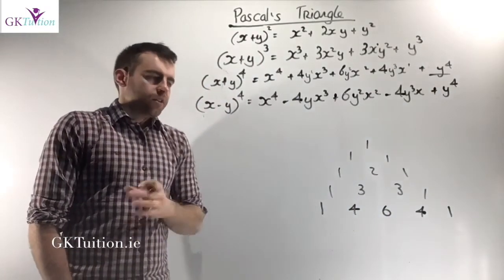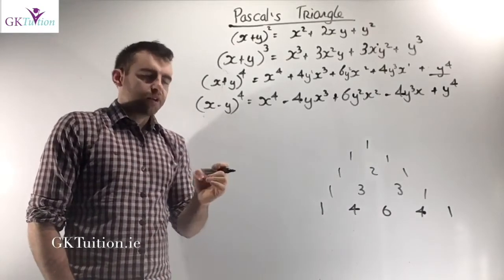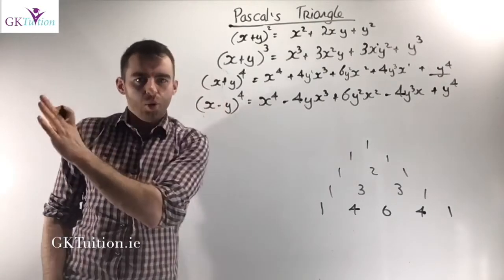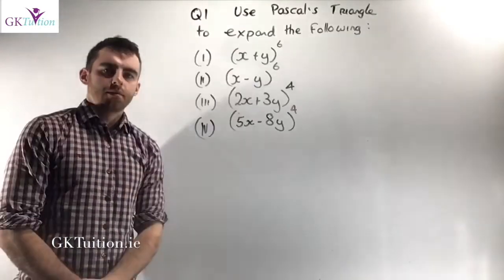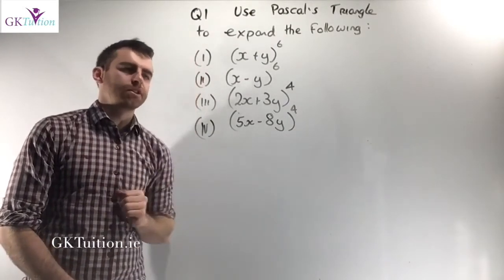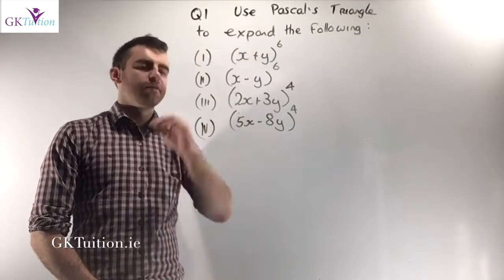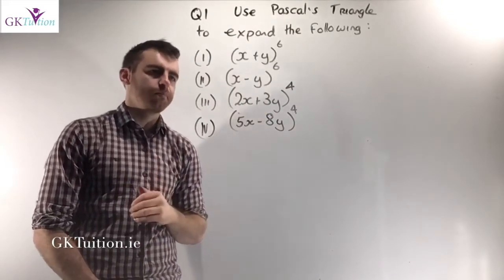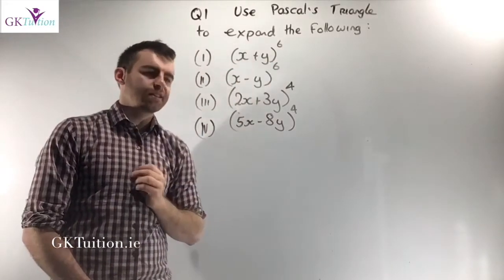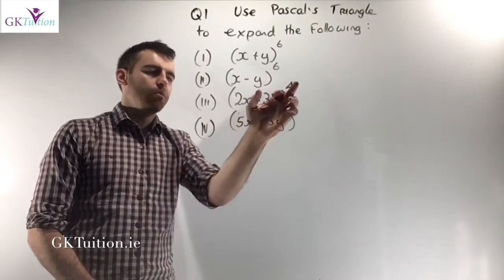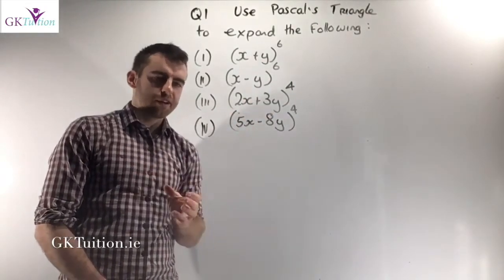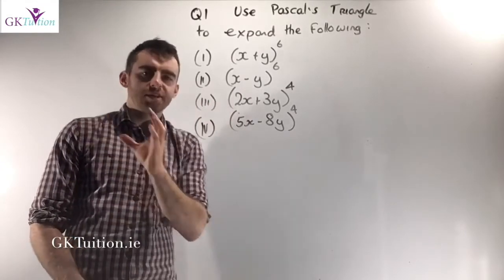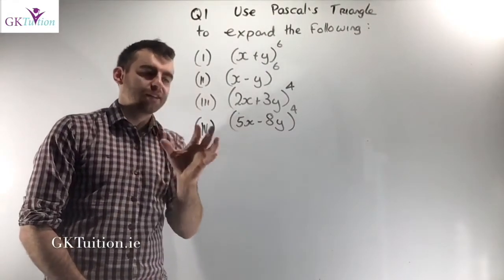That's all the theory you need for Pascal's Triangle. Now I'm going to give you a number of questions to try. Use Pascal's Triangle to expand the following — I'm not giving you the option of multiplying out or using the binomial theorem. Expand: x plus y to the power of 6; x minus y to the power of 6; 2x plus 3y to the power of 4; and 5x minus 8y to the power of 4. The last two are significantly harder. Pause the video now and work through these, then watch my solutions.